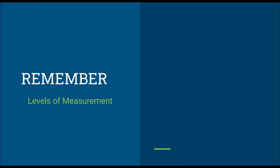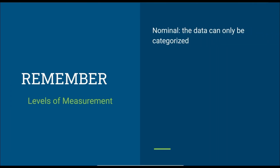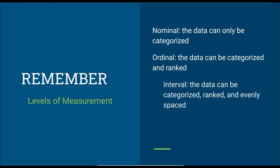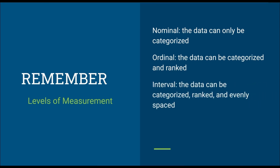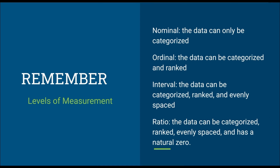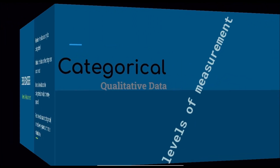Remember, for the different levels of measurement: in nominal, the data can only be categorized. Ordinal can be categorized and ranked. In interval, the data can be categorized, ranked, and evenly spaced. While in ratio, the data are categorized, ranked, evenly spaced, and has a natural zero.